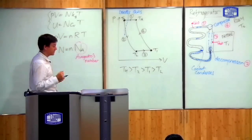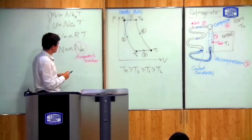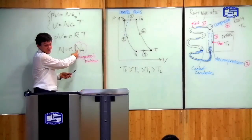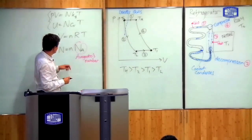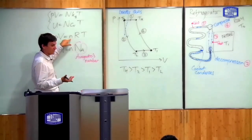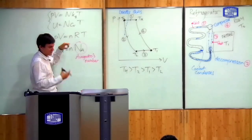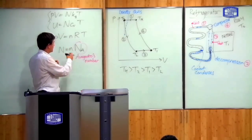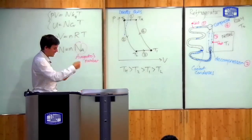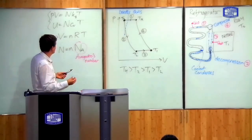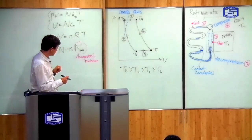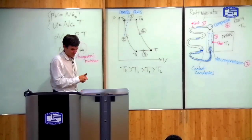So the first topic of the presentation is: how do you measure Avogadro's number? In other words, how do you count how many particles are in two grams of hydrogen? If I have two grams of hydrogen gas, how do I count how many molecules there are? Obviously, you can't just count them directly because there's no way you can see them, so you have to use indirect methods.